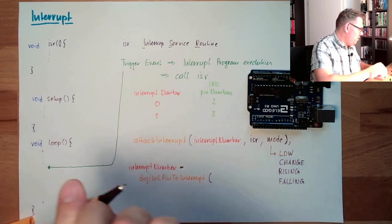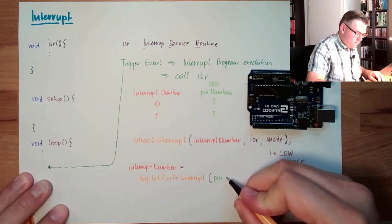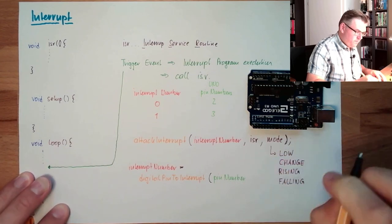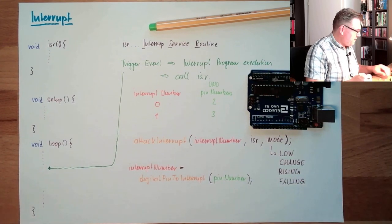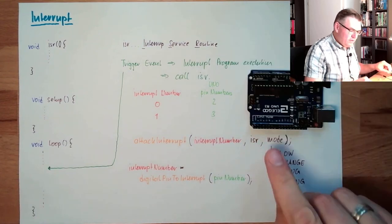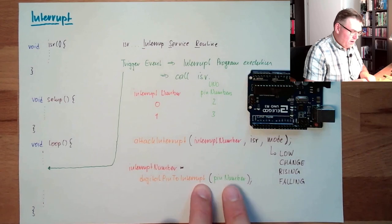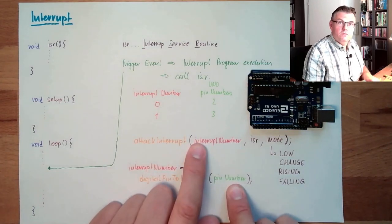Inside we have the pin number. This function here gives us the correct interrupt number for this pin. So if I want to listen to pin number two, I write here two, call digital pin to interrupt of two. I will get out zero and this zero I can use here.